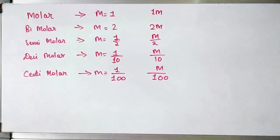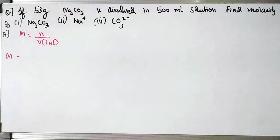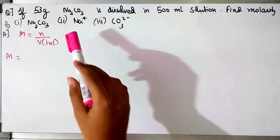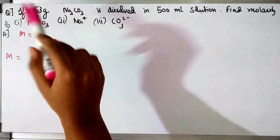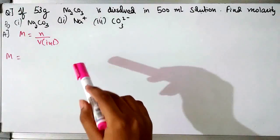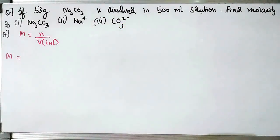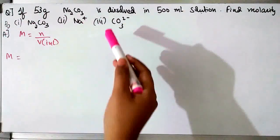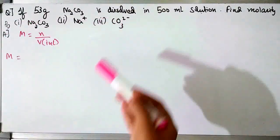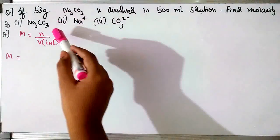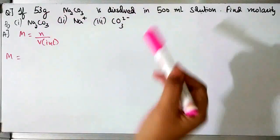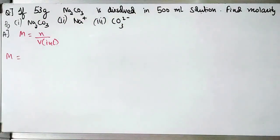Now let's deal with the molarity of ions. Whenever you have to find the molarity of ions, the first and foremost step should be to find the molarity of the compound whose ions you need to find. Once you find the molarity of the compound, only then can you find the molarity of the ions.